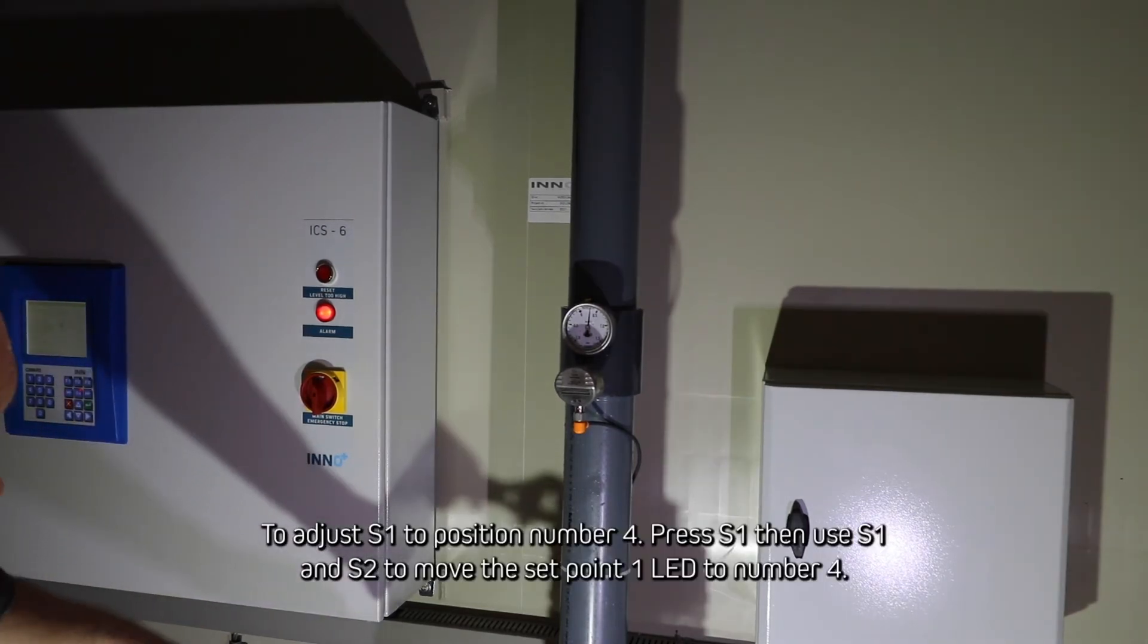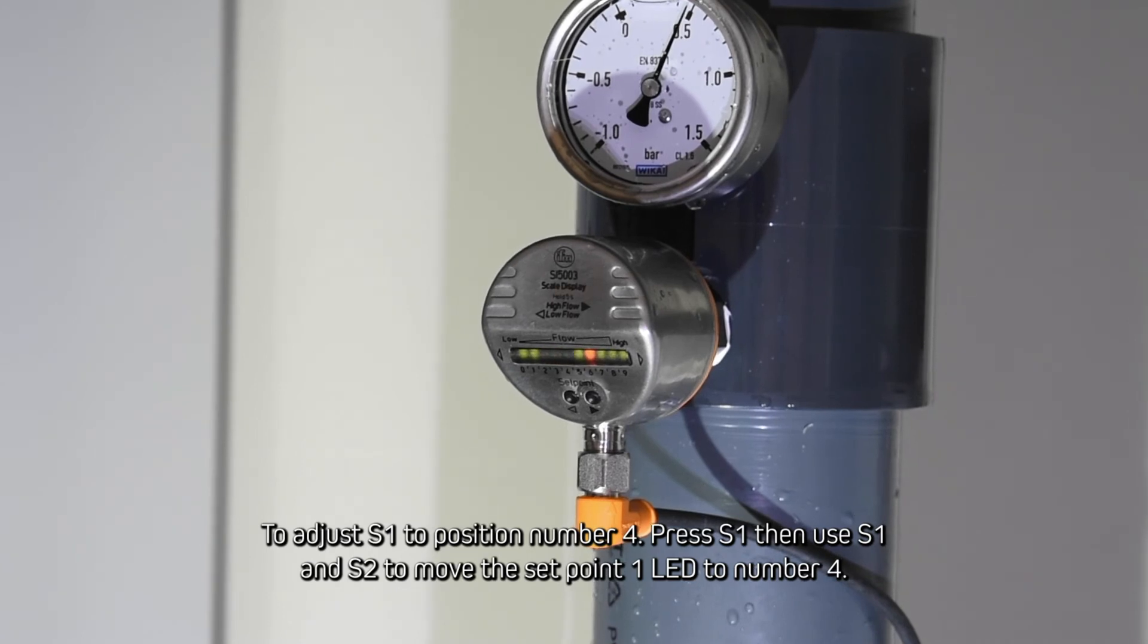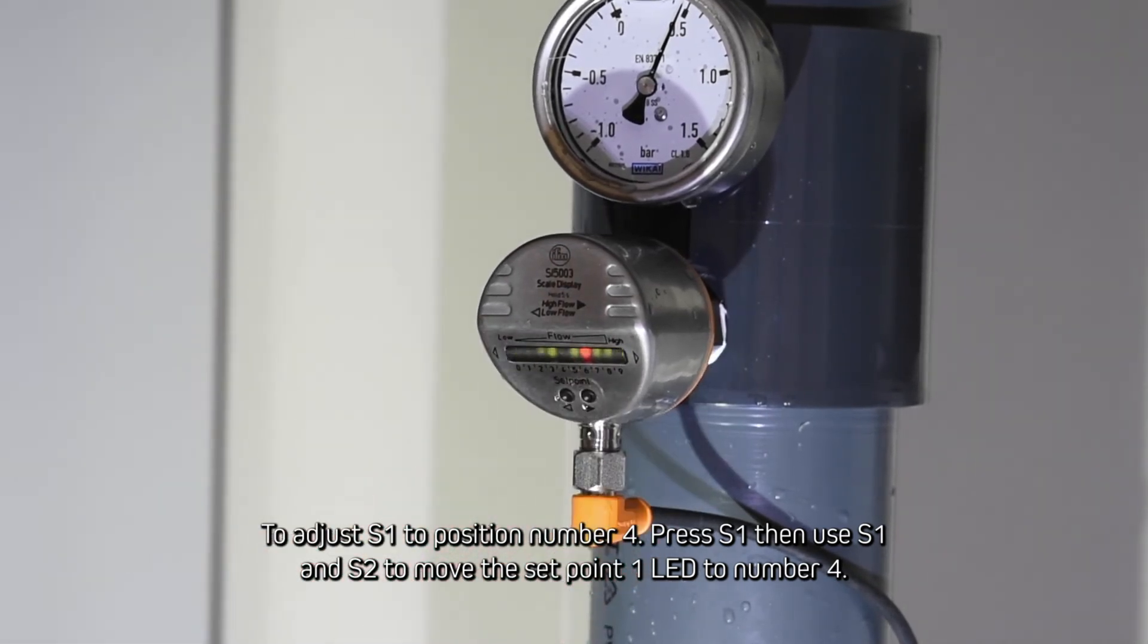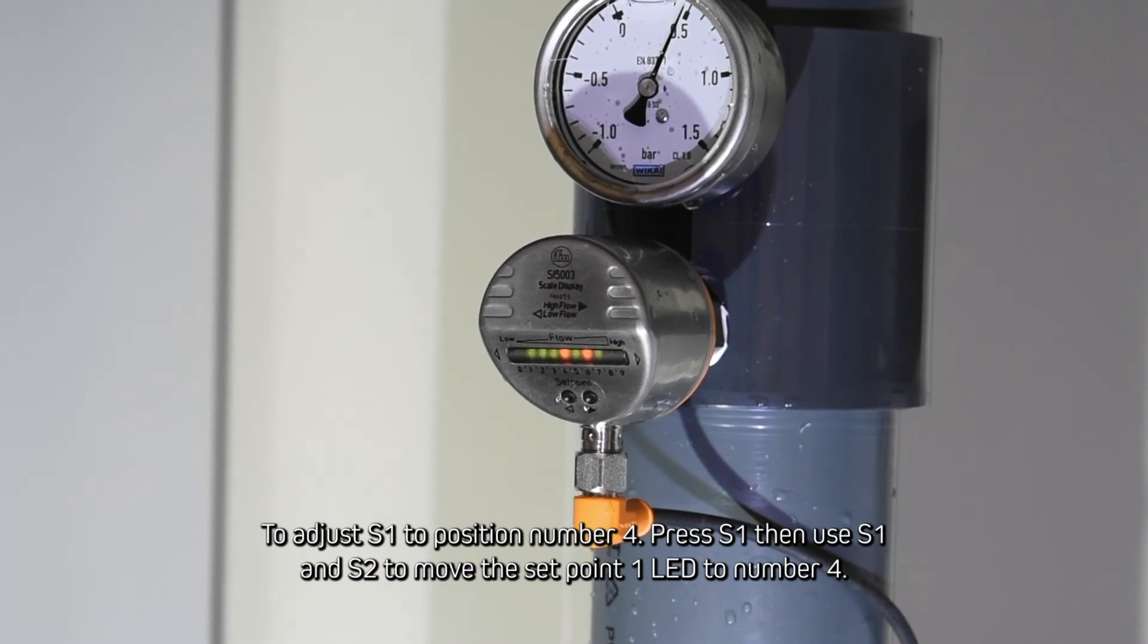To adjust S1 to position 4, press S1 then use S1 and S2 to move the setpoint 1 LED to number 4.